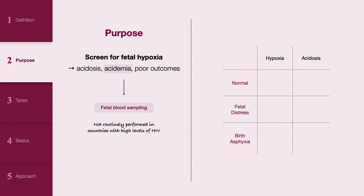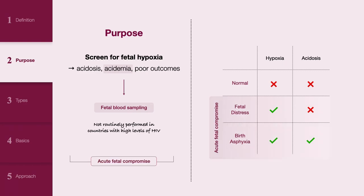What is the difference between normal fetal condition, fetal distress, and birth asphyxia? In a normal fetal state, the fetus receives adequate oxygen and nutrients from the mother via the placenta. Fetal distress signifies a condition where the fetus experiences hypoxia, indicated by changes in the fetal heart rate pattern on electronic fetal monitoring. Birth asphyxia represents a more severe state where the fetus suffers from both hypoxia and acidosis during delivery. Both fetal distress and birth asphyxia represent acute fetal compromise, and this is essentially what the CTG is screening for.